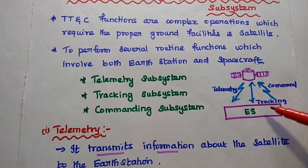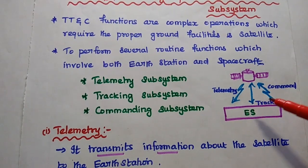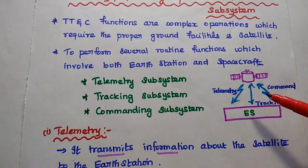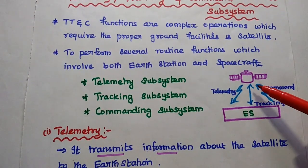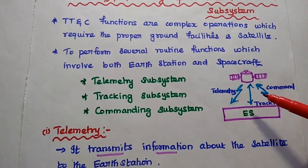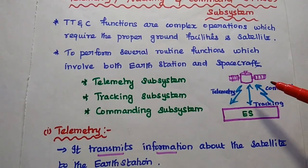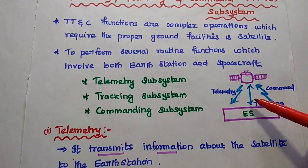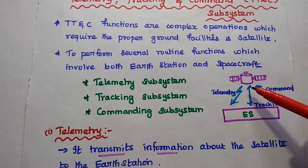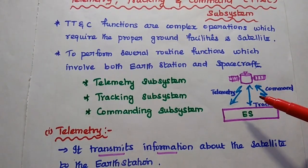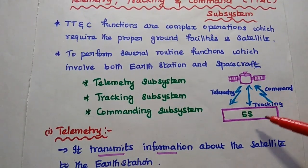The tracking subsystem is mainly used to track the position of the satellite, because during the transfer and drift phases of the satellite launching process, there may be some orbital changes due to disturbing forces. If there is any change in the orbital position, that has to be identified as well as controlled by using this tracking system.